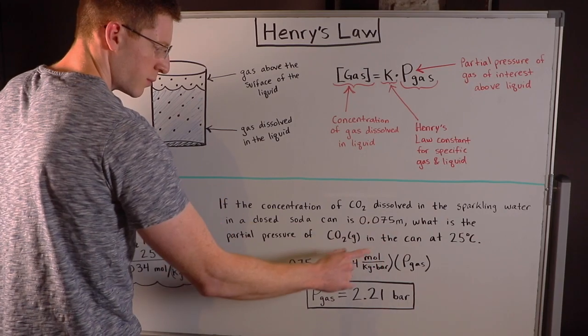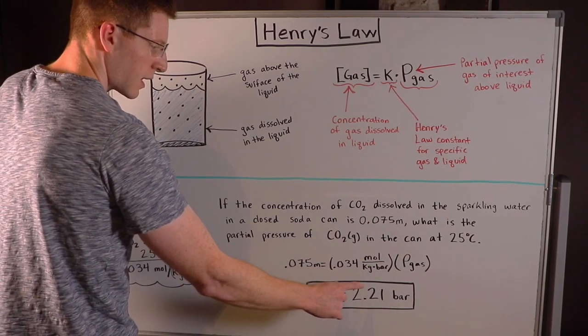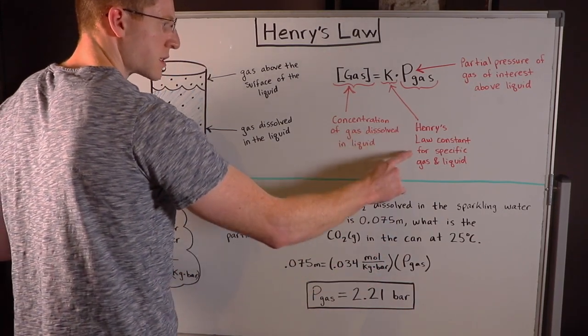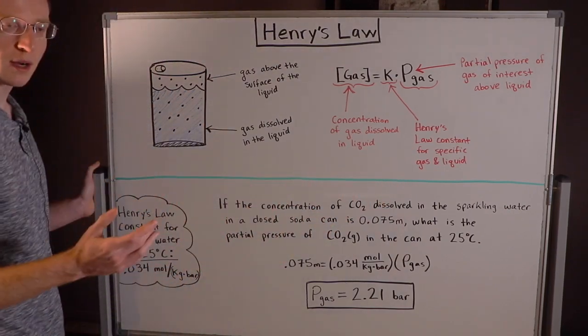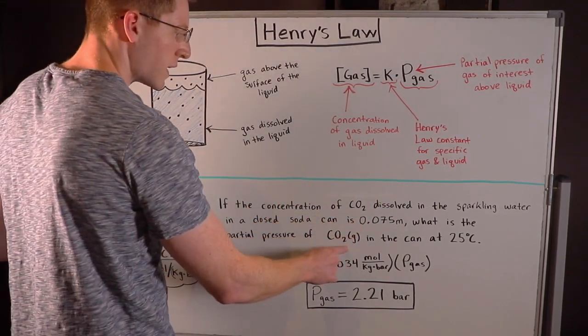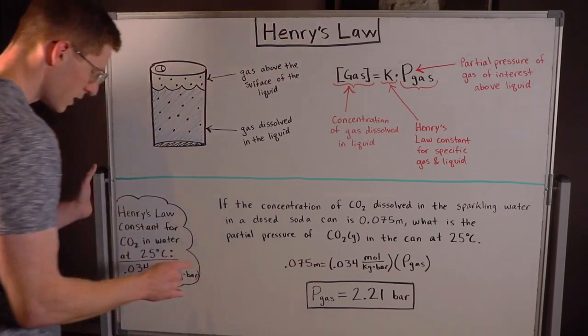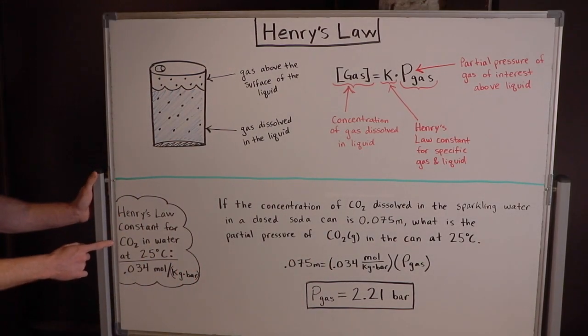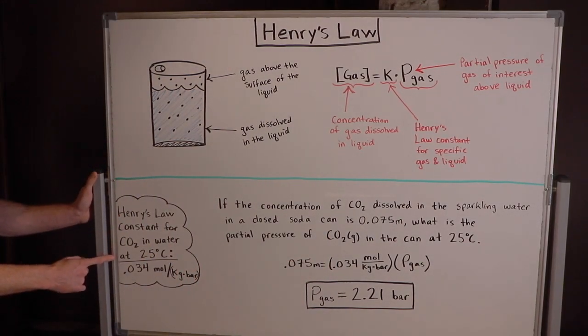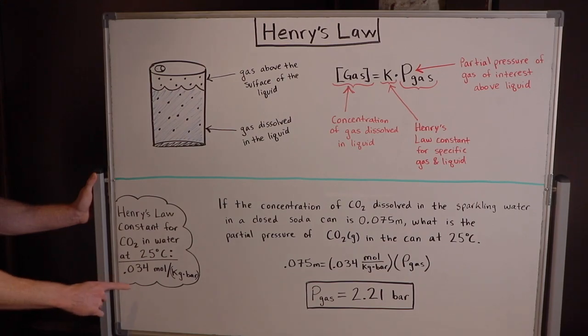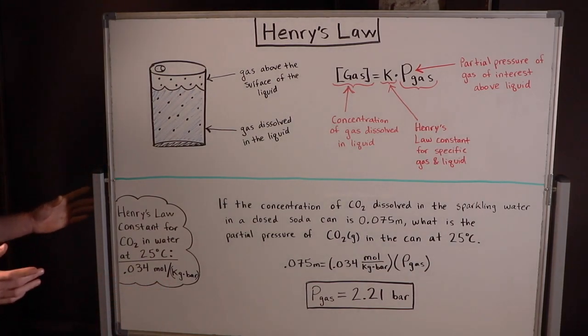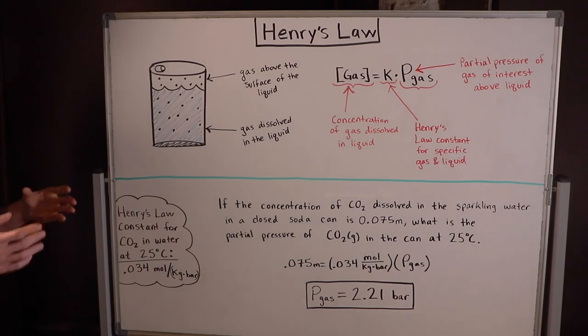So I put this 0.075 molal right here and I set that equal to my Henry's Law constant for this specific gas and liquid pair. In this case it's CO2 gas and liquid water and I found that the Henry's Law constant for CO2 and water at 25 degrees Celsius is 0.034 moles per kilogram times bar and you should be able to find this on a table.